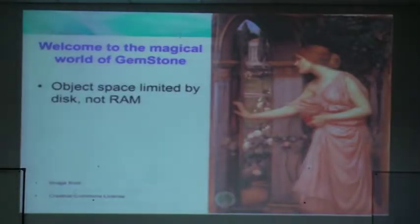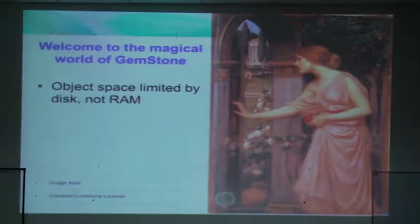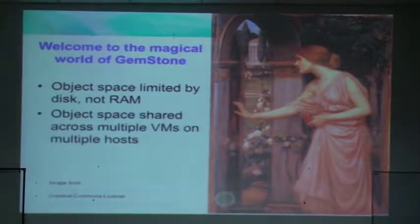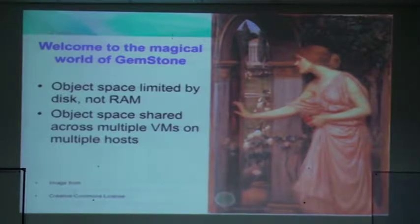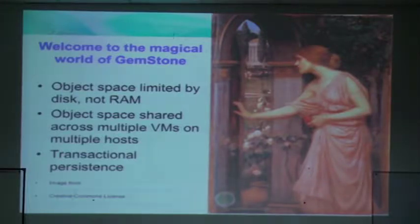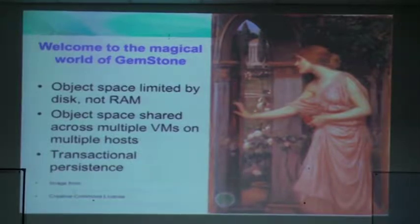In GemStone, object space is limited by disk rather than by RAM — as much disk space as you have, up to a certain design limit, you can put into the object space. Object space is shared across multiple VMs running on multiple hosts, so multiple sessions can access the same shared object space. We also have transactional persistence: once a transaction has been committed, it will be saved to the database and not lost.